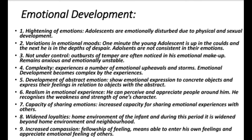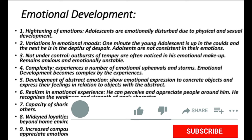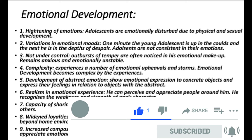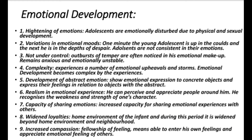Emotional characteristics of adolescence: adolescence is the age of emotional havoc — there is no mental peace, calm, and quiet for the adolescent. The period of adolescence is marked by emotional storm and stress. Some characteristics: first, heightening of emotions — adolescents are very emotionally disturbed due to physical and sexual development; emotions are very intense. Second, various variations in emotional moods — emotional moods vary from elation to depression. One moment the young adolescent is on top of the world and the next is in the depths of despair, sometimes thinking of committing suicide. From tears to laughter, from self-confidence to self-depreciation, from selfishness to altruism, and from enthusiasm to indifference are all common reactions. Adolescents are not consistent in their emotions.